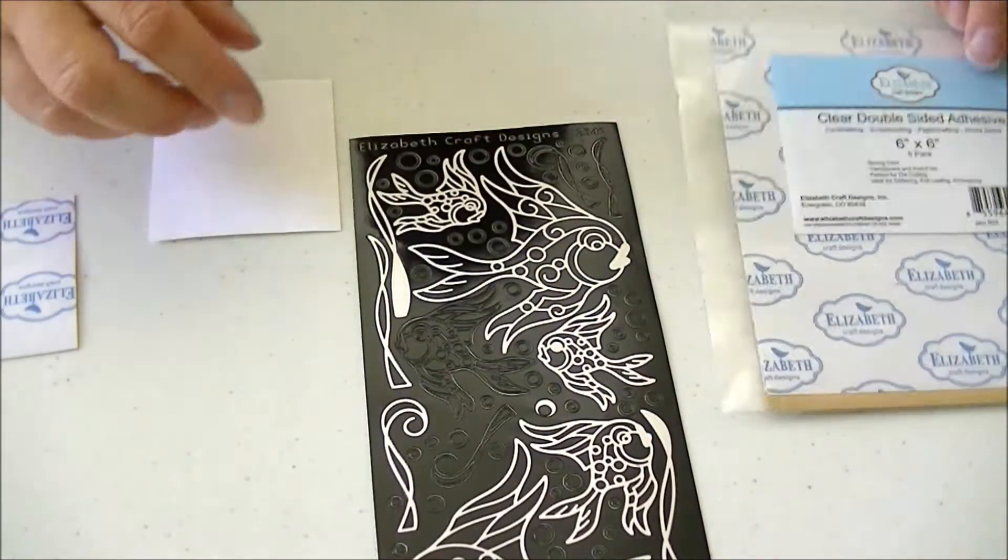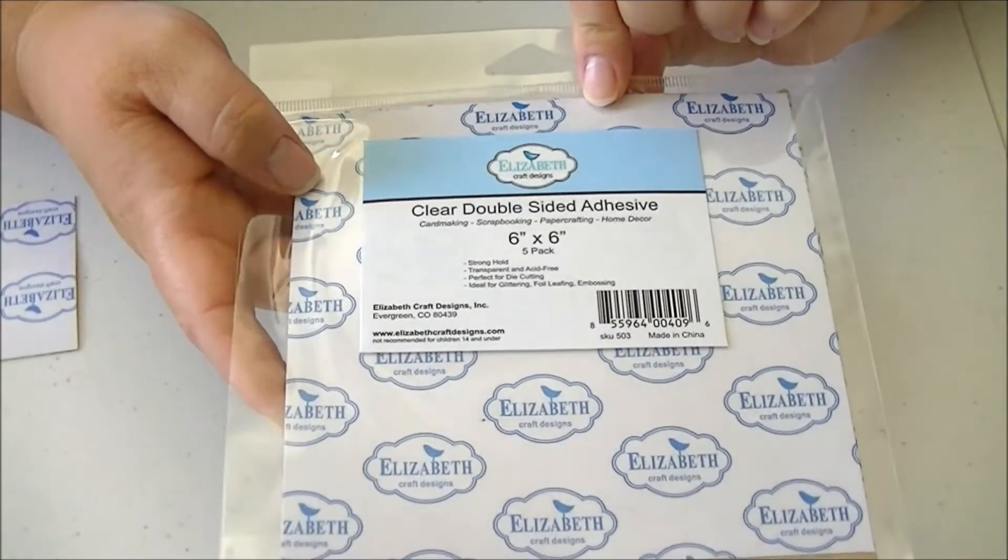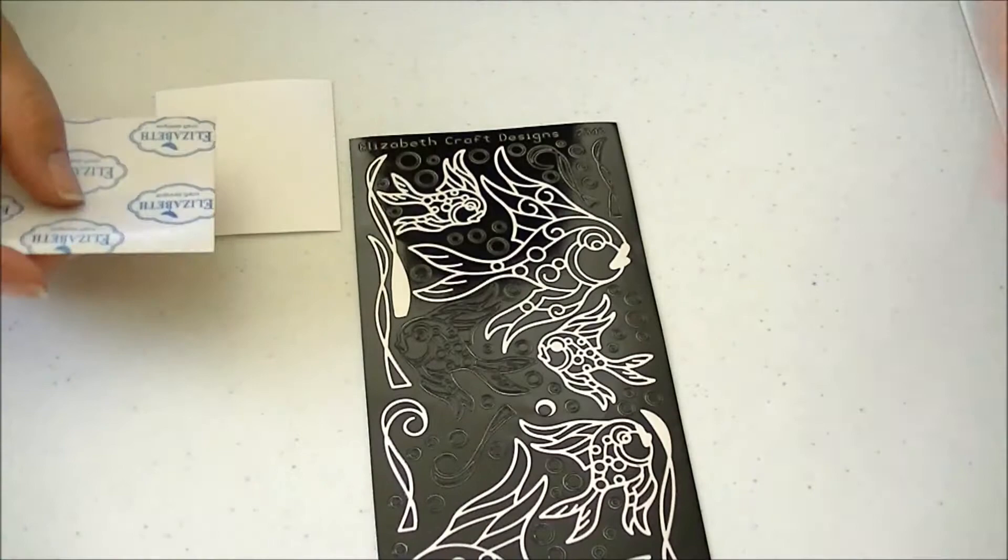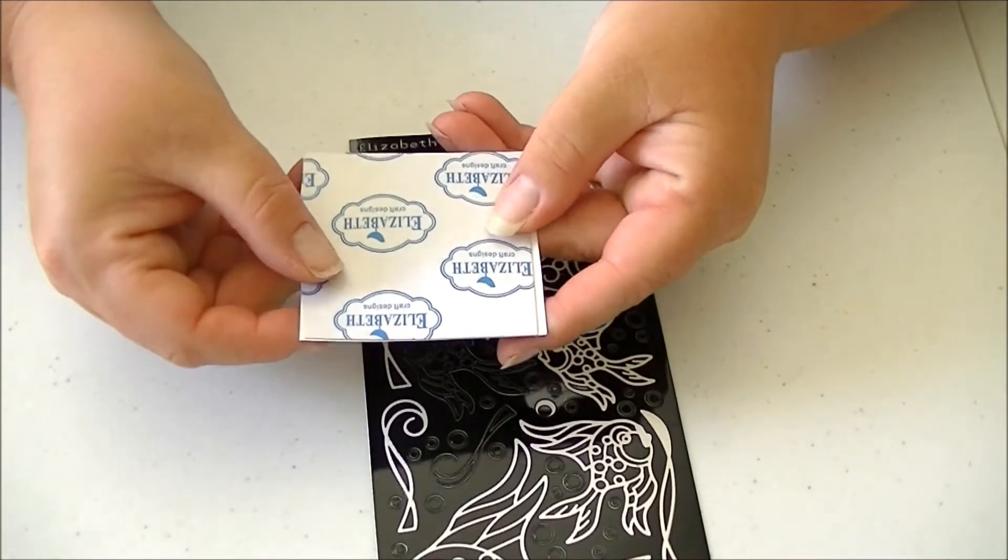Then we want to cut a piece of Elizabeth Craft Designs clear double-sided adhesive just a little bit bigger or a little bit smaller than our cardstock.